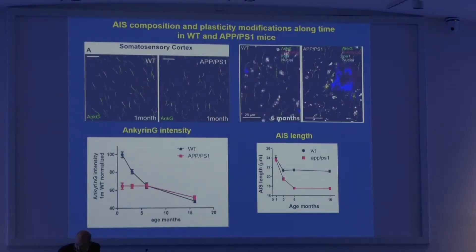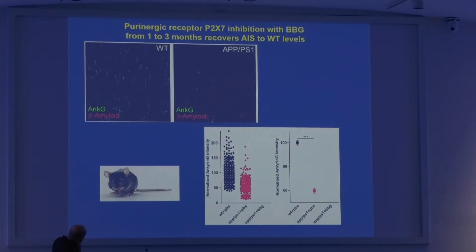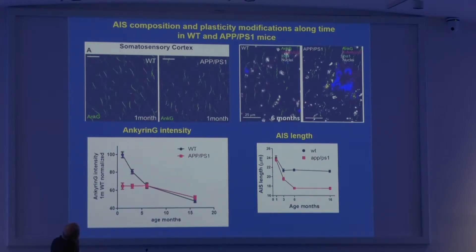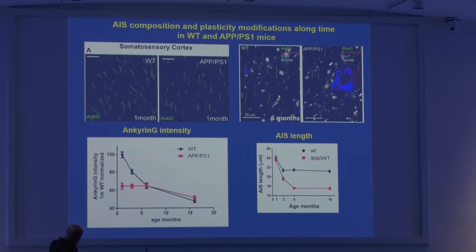We analyzed APP/PS1 mice over time, examining the cortex and hippocampus from one month to sixteen months. Looking at all the axon initial segments, at one month we are already losing 40% of AnkyrinG — the key protein anchoring voltage-gated ion channels — in the axon initial segment. At three months there is no change in APP/PS1, but you see in wild-type mice that the axon initial segment intensity decreases with aging. So very early on, the axon initial segment is already altered in APP/PS1 mice — it still works but less than in wild types.